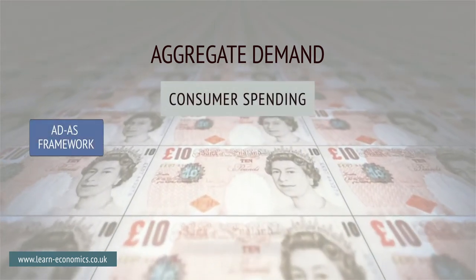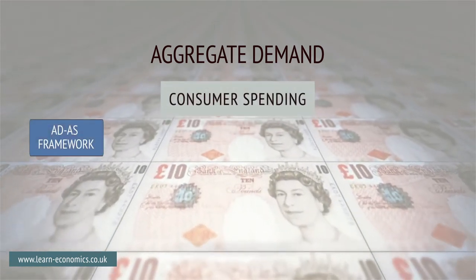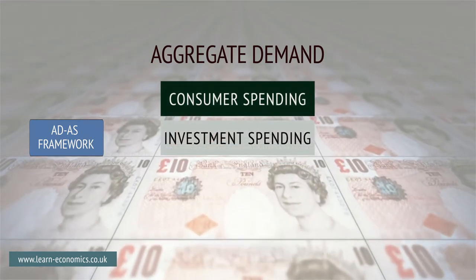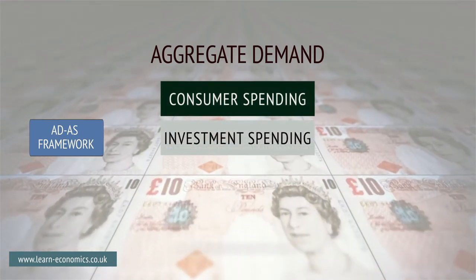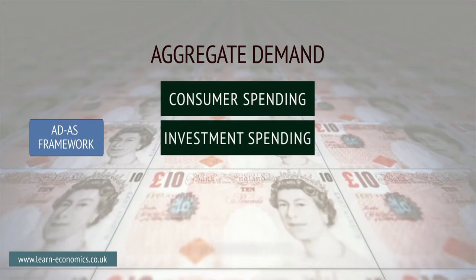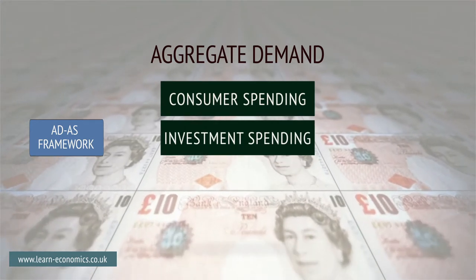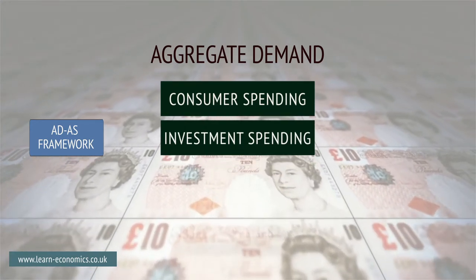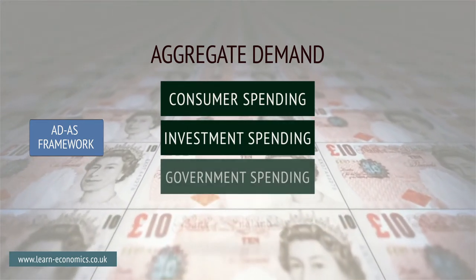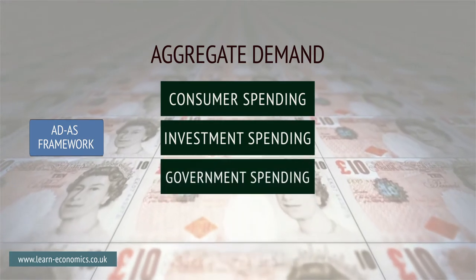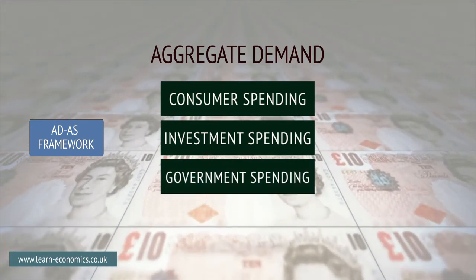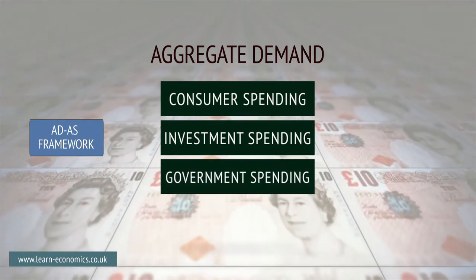Aggregate Demand, or AD for short, is the sum of consumer spending and spending by firms on capital goods like machinery, equipment, and premises. It also includes spending by the public sector on public and merit goods, such as roads, bridges, and defence, and education, and healthcare.